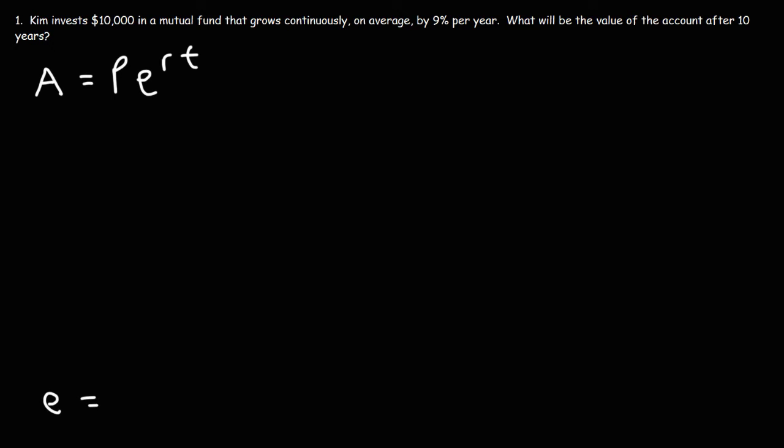Now E is a specific number. If you type in E into your calculator you get this number. It's 2.7182818. So that's the approximate value of E.